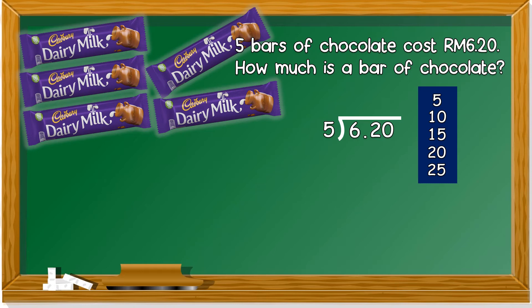So we take a look at 6 first. Can 6 divided by 5? No. But the nearest, the smaller number is 5. So 1 times 5 is 5. 6 minus 5 is 1. You get a remainder of 1. Remember, you have learned about remainder when you learn about division.